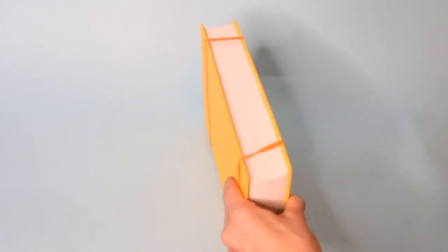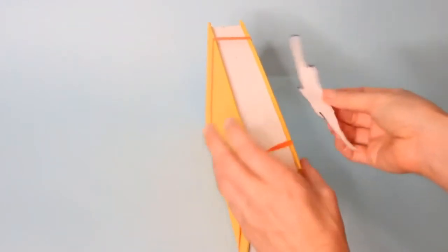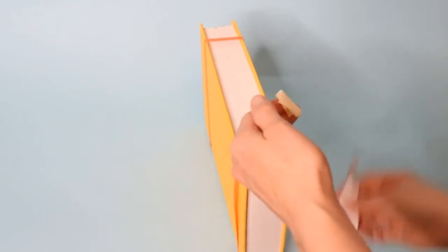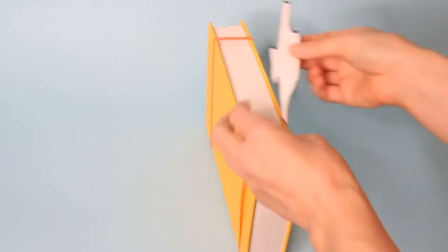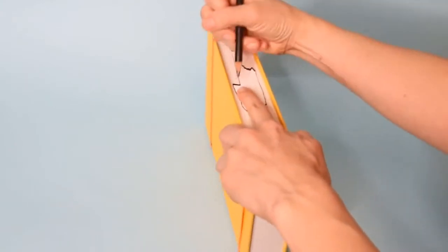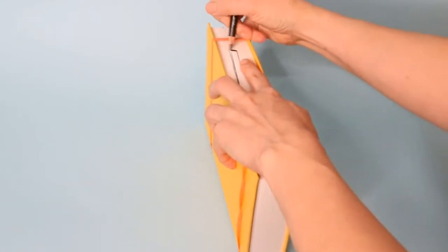Now it's time to trace the stencil on the side of the book. To make it easier you can hold the book closed with rubber bands and use tape to keep the stencil in place. Trace all around the image with a pencil. You could also freehand draw your own image if you're not using a stencil.